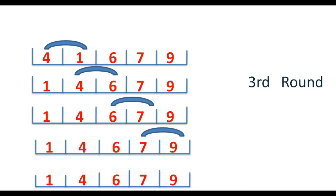Ideally, the maximum number of rounds needed is up to the length of the array, so in 5 rounds the array should be sorted for this 5-element example. Notice that the greatest element is bubbled up in every pass — 9 was already at the end, and 7 reached its position in the first round itself. So in each pass the greater elements are placed correctly, which means each time we do not need to iterate the array all the way to the end.